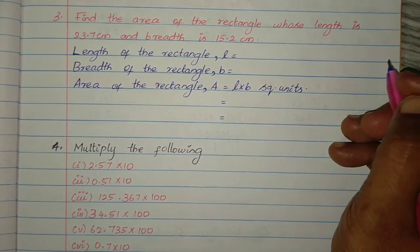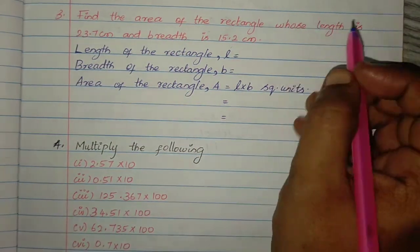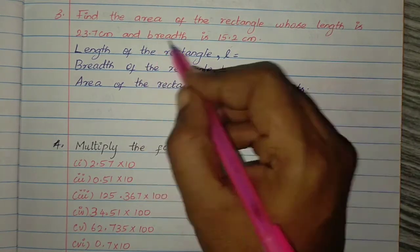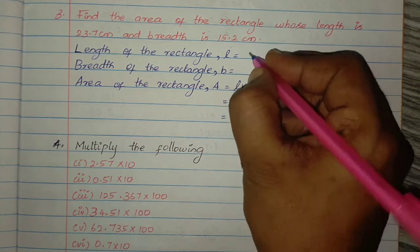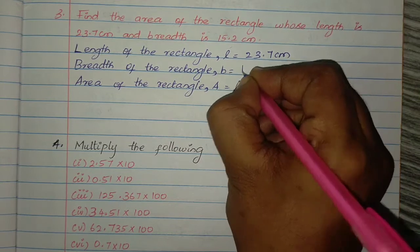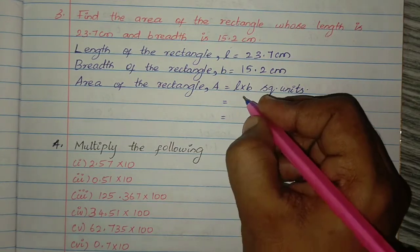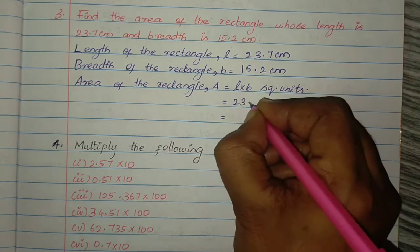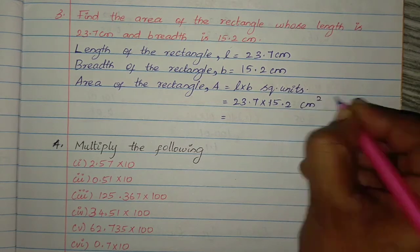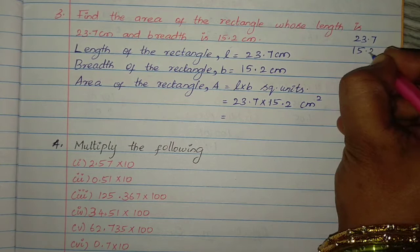Find the area of the rectangle whose length is 23.7 cm and breadth is 15.2 cm. Area of the rectangle = length × breadth (square unit). Let's find it. Length = 23.7 cm, breadth = 15.2 cm. So area = 23.7 × 15.2 cm square. Multiply 23.7 × 15.2.